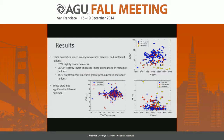Some quantities were not significantly different between uncracked and cracked regions: δ18O is slightly lower along cracks but not to a significant extent, with substantial overlap. The cerium anomaly tends to be slightly lower along cracks — more pronounced in metamict regions. Thorium-uranium tends to be slightly higher, though not to a significant extent.